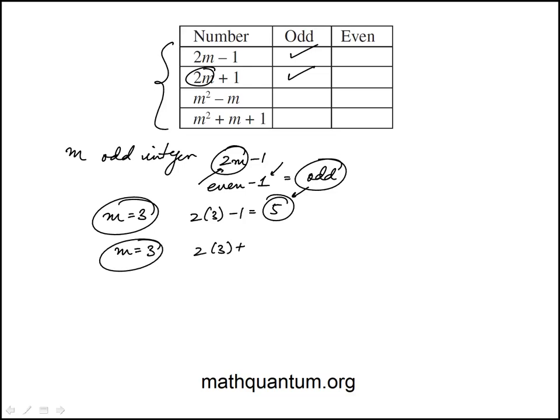m squared minus m. If m is odd, odd squared minus odd—odd squared is odd, odd times odd, odd minus odd is even—so this would be even. Or you could say 3 squared minus 3, 9 minus 3 is 6.